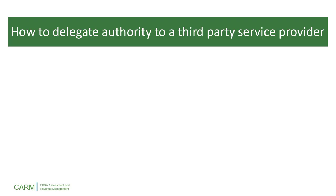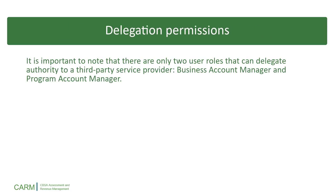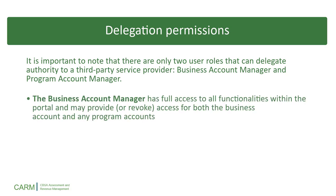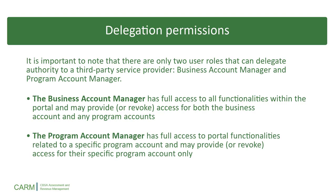Now let's review the process for delegating authority to a third-party service provider. It is important to note that there are only two user roles that can delegate authority to a third-party service provider: Business Account Manager and Program Account Manager. The Business Account Manager has full access to all functionalities within the portal and may provide or revoke access for both the Business Account and any Program Accounts. Program Account Managers have full access to portal functionalities related to a specific Program Account and may provide or revoke access for their specific Program Account only.